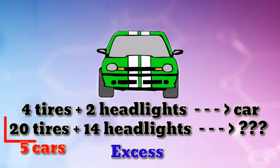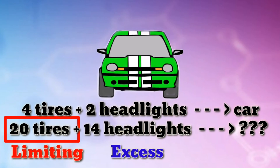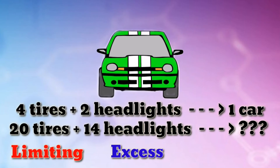The tires are the limiting reagent — they limit the full completion of the reaction, in which all of the reactants are used up. This scenario is illustrated as: four tires plus two headlights equals one car. The initial condition is that there must be four tires to two headlights; the reactants must thus occur in that ratio. Otherwise, one will limit the reaction.